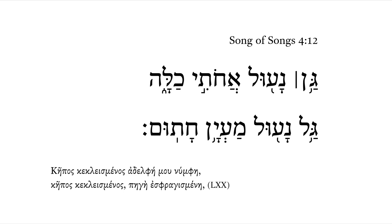Song of Songs 4:12. We begin here with 'gan,' a garden — a pretty common word. I just noticed I put the Septuagint on here; don't get confused, this is still Daily Dose of Hebrew.